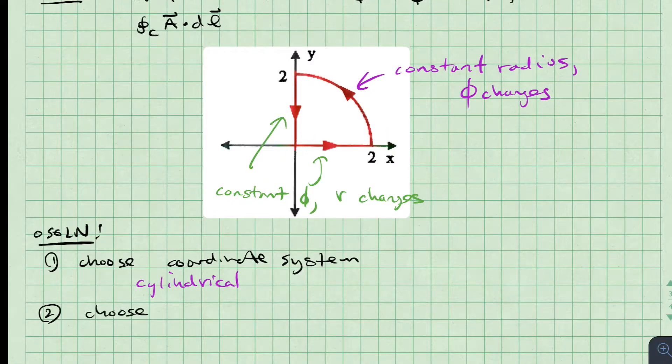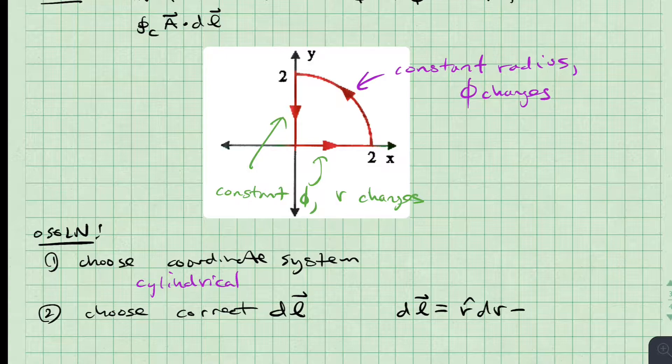Next we will choose the correct differential length. Since this is the cylindrical coordinate system, our dl is r hat dr plus phi hat r d phi plus z hat dz.